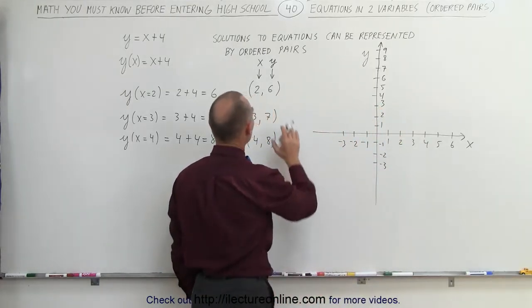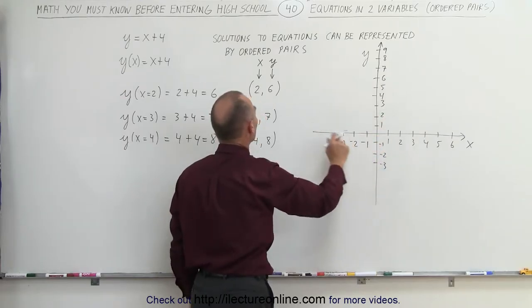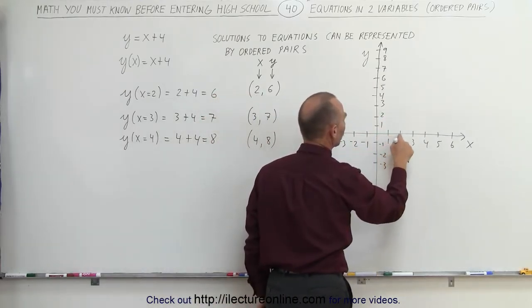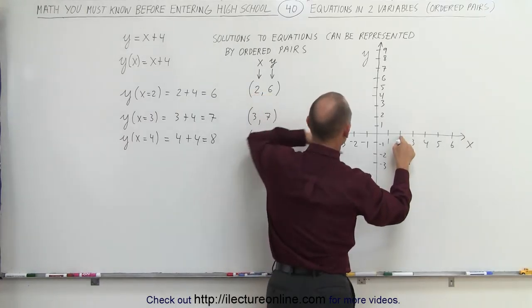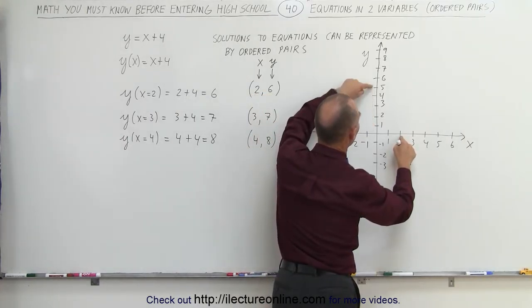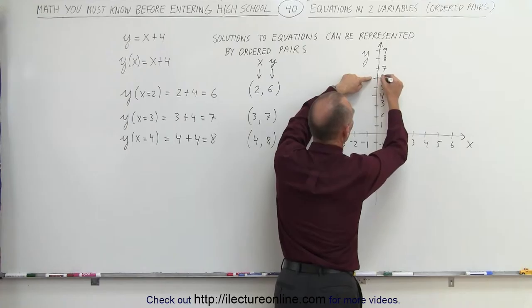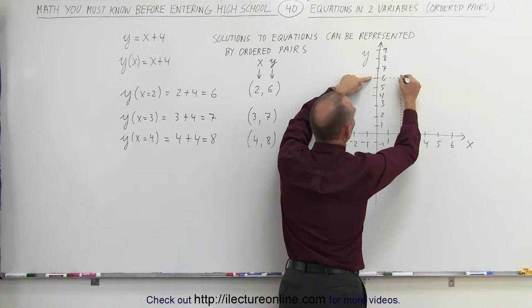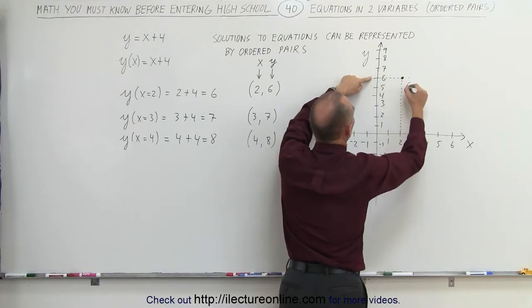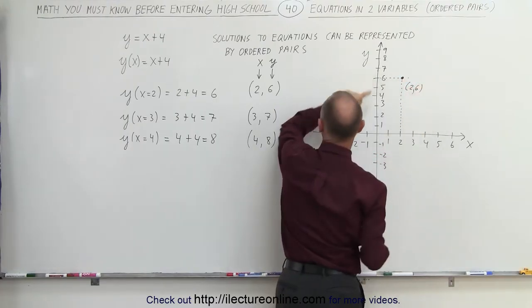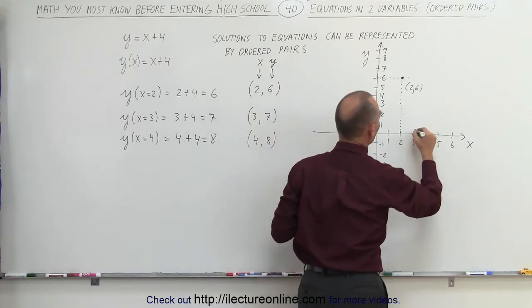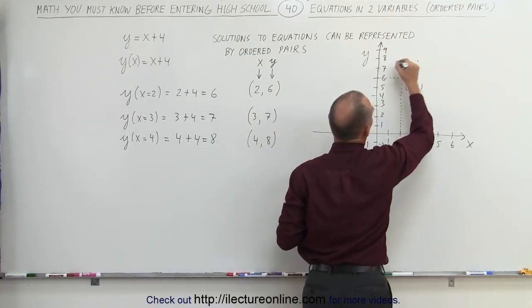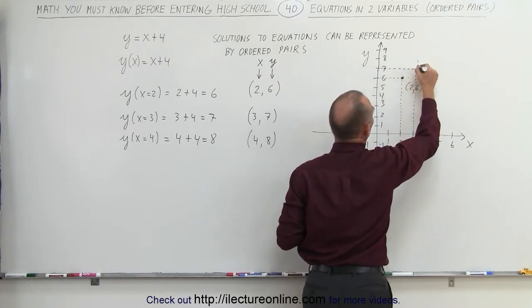So to find the values for the ordered pair on the x-y coordinate system, we first find the number 2 on the x-axis, then we find the number 6 on the y-axis. When we draw a horizontal line and a vertical line, where the two meet, that's where we have the ordered pair (2, 6). We can do the same for 3 and 7 — draw a vertical line straight up, and a horizontal line for the number 7, and where the two meet, that's where we have the ordered pair (3, 7).